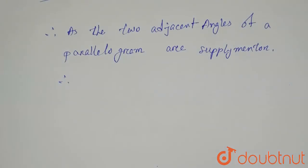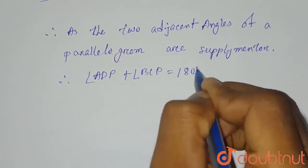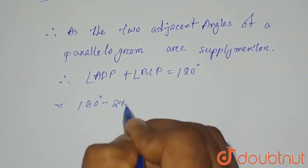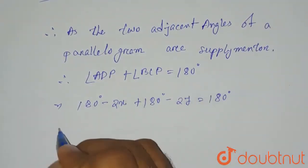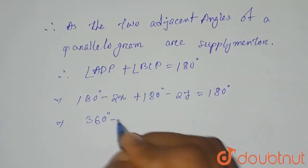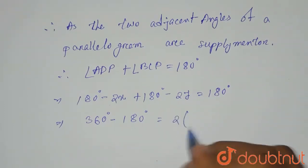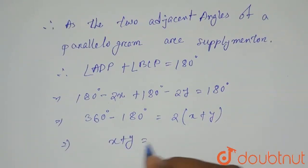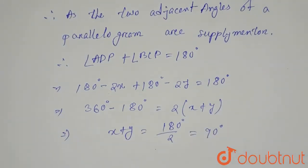Substituting: (180° − 2x) + (180° − 2y) = 180°. This gives 360° − 2(x + y) = 180°, so 2(x + y) = 180°, which means x + y = 90°.